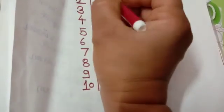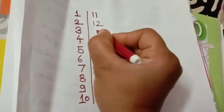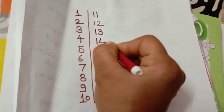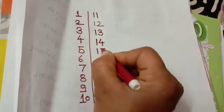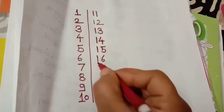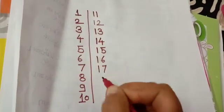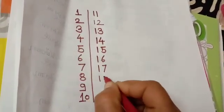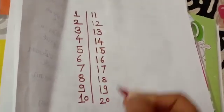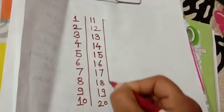Then 1-1, 11, 1-2, 12, 1-3, 13, 1-4, 14, 1-5, 15, 1-6, 16, 1-7, 17, 1-8, 18, 1-9, 19, and 2-0, 20.